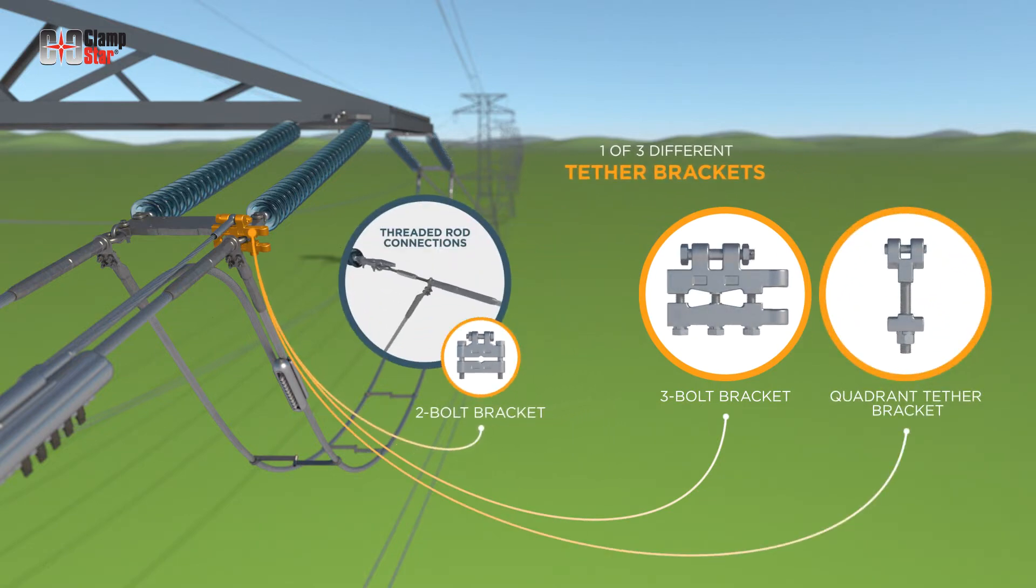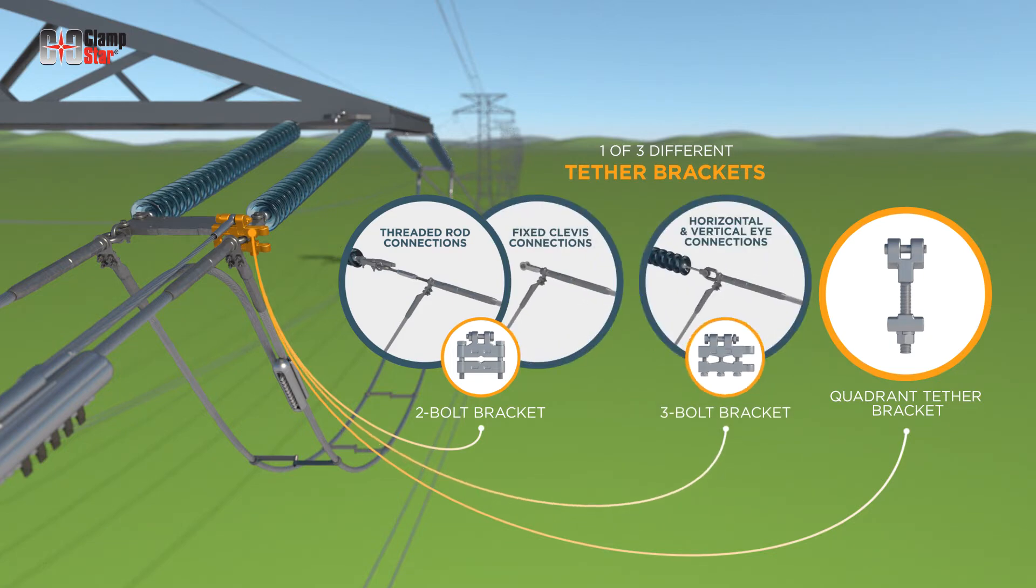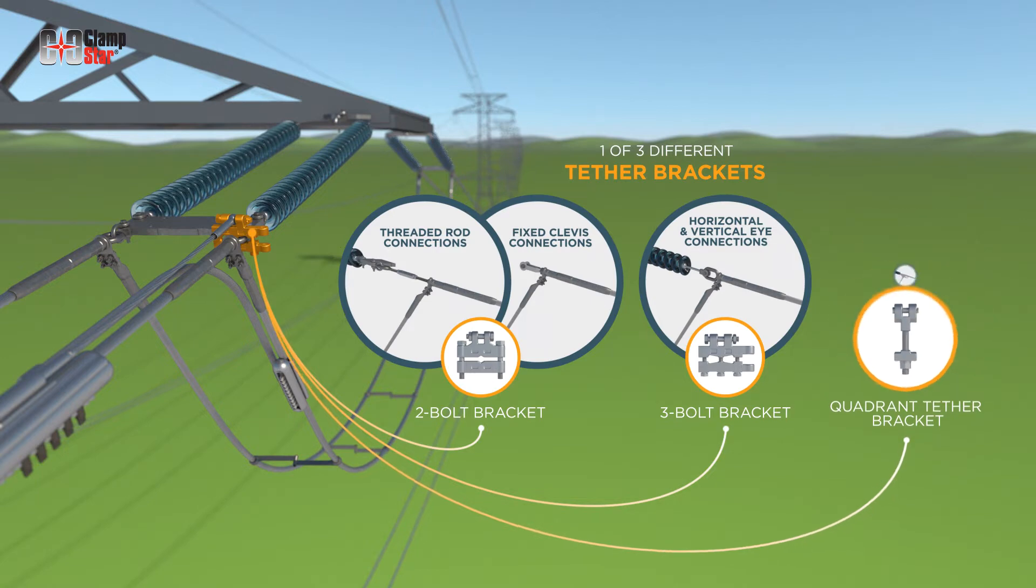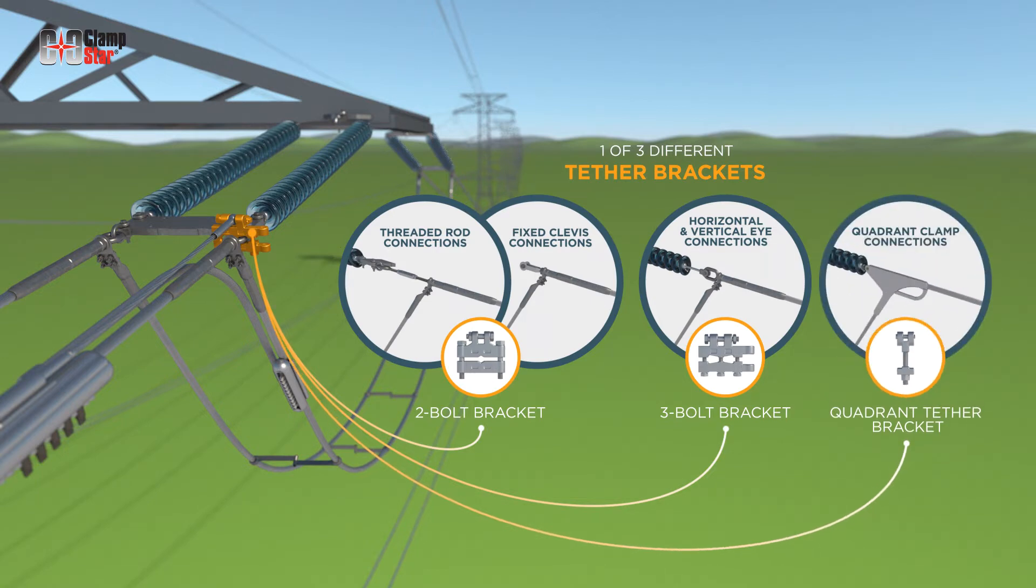Two-bolt brackets are used for threaded rod and fixed clevis connections. Three-bolt brackets are used for horizontal and vertical eye connections. And quadrant tether brackets are used for quadrant clamp connections.